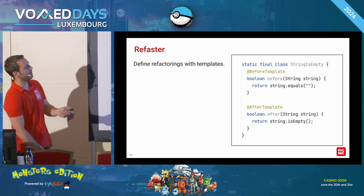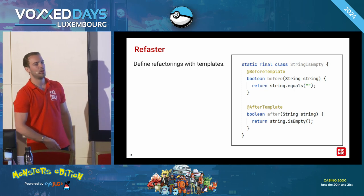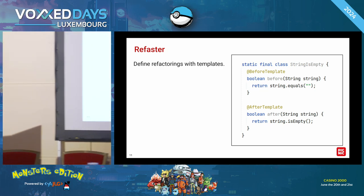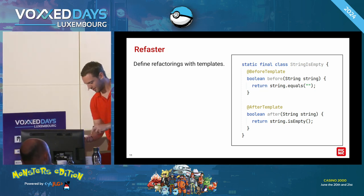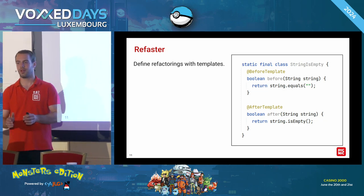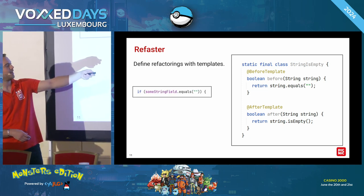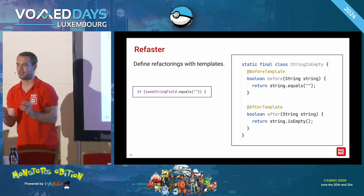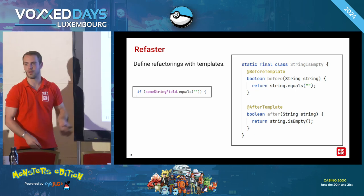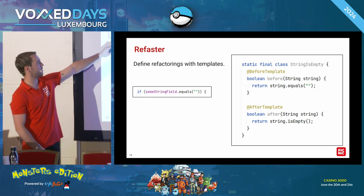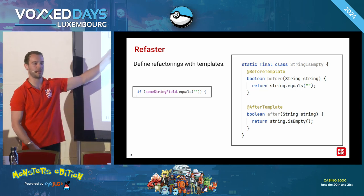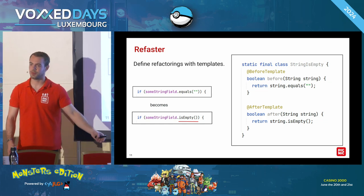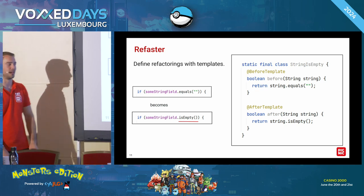Here's an example: we have a before template where we say we want to match a string where we use the method invocation equals, and we would like to rewrite that to the content in the after template. The cool thing is that there is a parameter string there, which means that when Refaster is analyzing your code, it will put in the refaster rule all expressions that are of type string. So an example is a string field in an if statement — it will check, hey, does some string field use equals? If it does, that's a match, and it simply rewrites it to .isEmpty. There are many things you can do with Refaster, and we'll take a look during the deep dive.